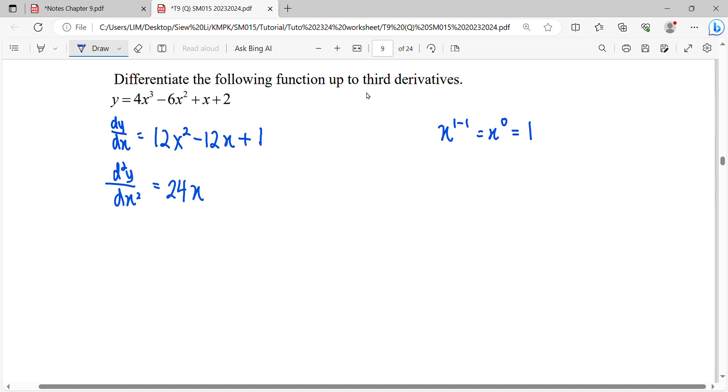This one? Negative 12. x power 0 equals 1. Differentiate the constant term, equals 0. Second derivative complete.